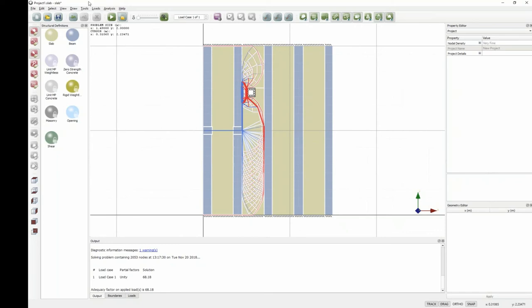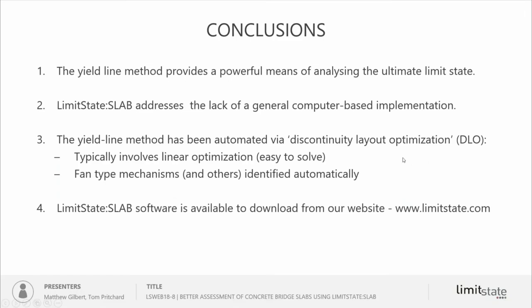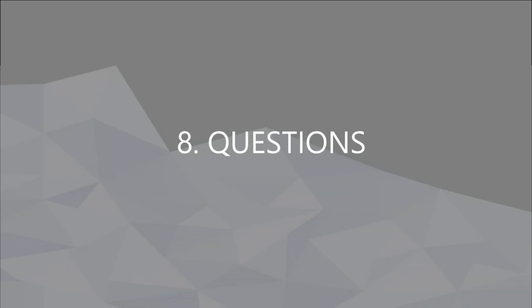That's probably about the end. The last thing is to look at the conclusions. The yield line method provides a powerful means of analyzing the ultimate limit state. Limit State Slab addresses the lack of a general computer-based implementation for the yield line method. We have automated it using Discontinuity Layout Optimization, which is a linear optimization problem that is easy to solve, and you can identify a wide range of different failure mechanism types automatically — including fan-type mechanisms, which can be difficult to identify with FEA methods. Limit State Slab software is available to download from limitstate.com.